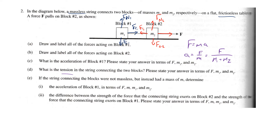What's the tension in the string connecting the two blocks? We're looking for ft1. Considering just block one, the net force is ft1 and we know the acceleration. So ft1 equals m1 times a, which equals m1 times F over (m1 + m2). That's the tension in the string.